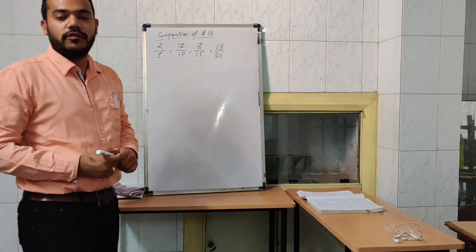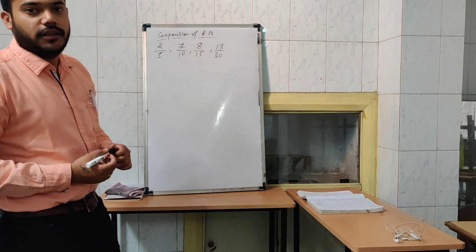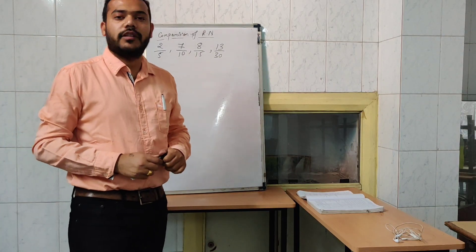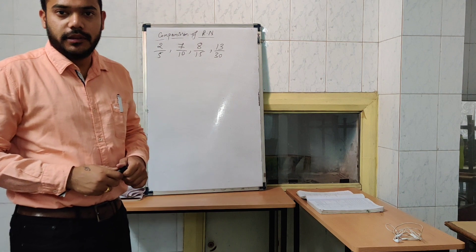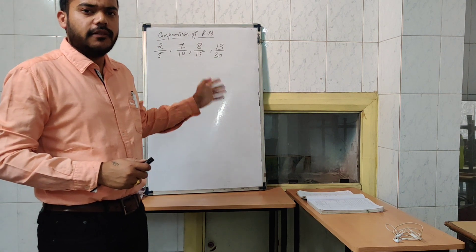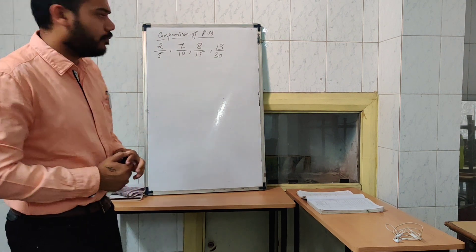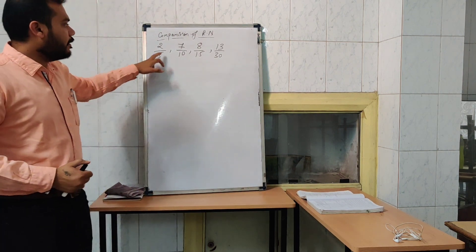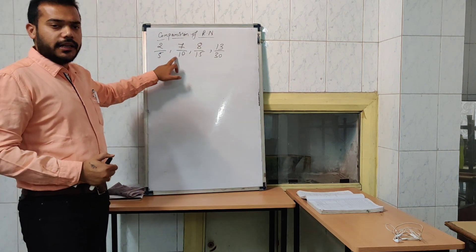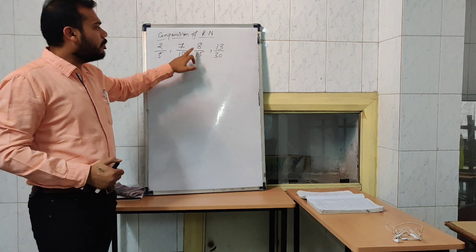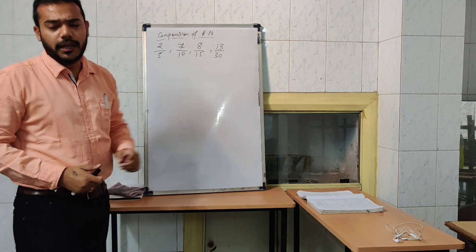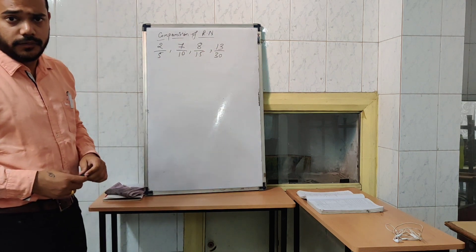Good afternoon friends. Our new topic is Comparison of Rationals. Let us take one example: 2 by 5, 7 by 10, 8 by 15, and 13 by 30.